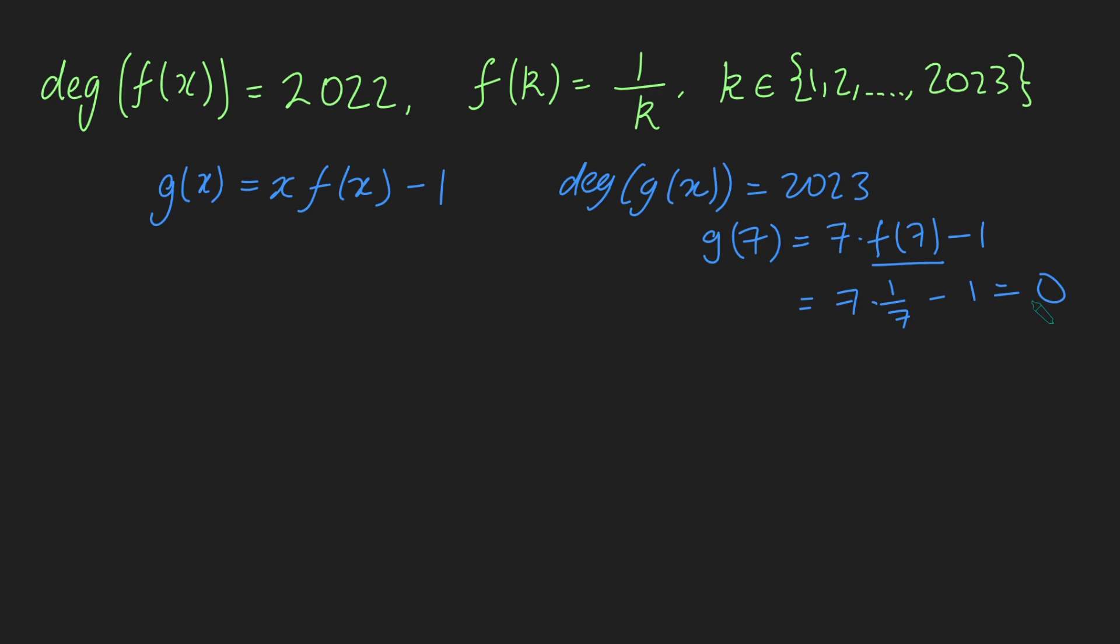So, we've managed to find all 2023 roots of this degree 2023 polynomial, which means we can then factorize it. So, we can say that g of x is some constant a, which we don't know yet, multiplied by x minus 1, times x minus 2, times x minus 3, and so on, all the way up to x minus 2023. Lovely, we've got what g of x is.